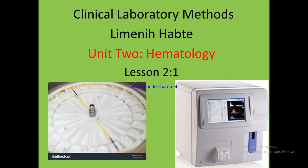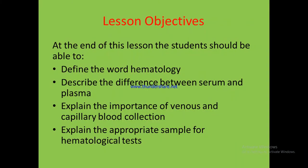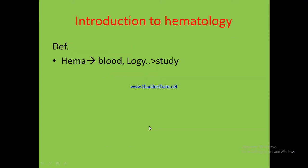This is Lesson 1. Under this lesson we have prepared objectives. At the end of this lesson, students are expected to: define hematology, describe the difference between serum and plasma, explain the importance of venous and capillary blood collection, and explain the appropriate sample for hematological tests.